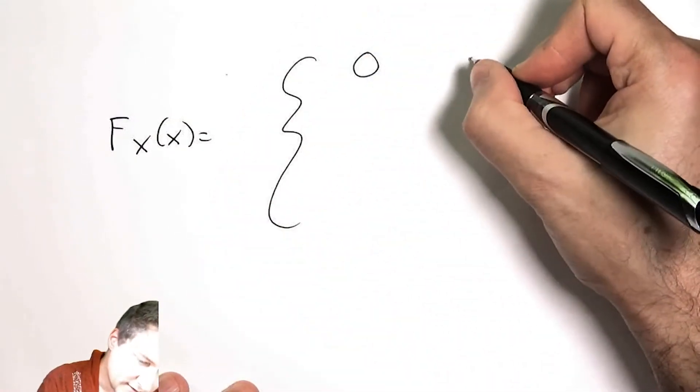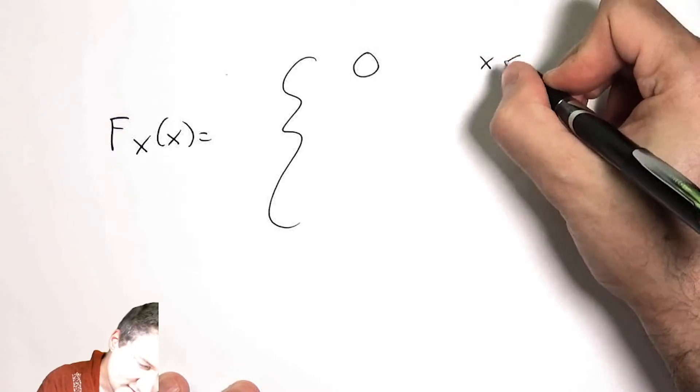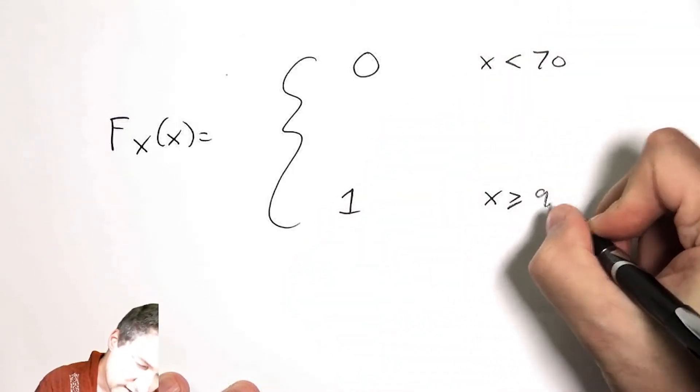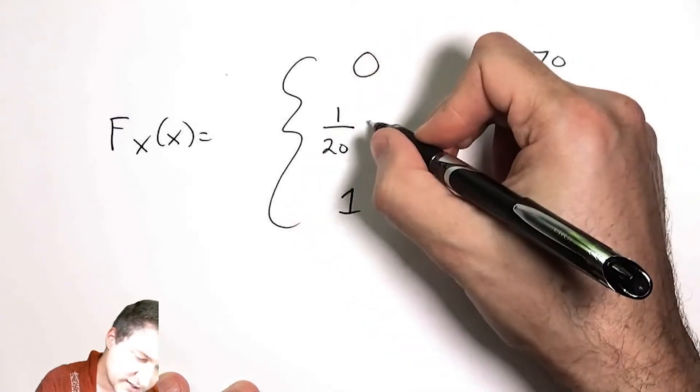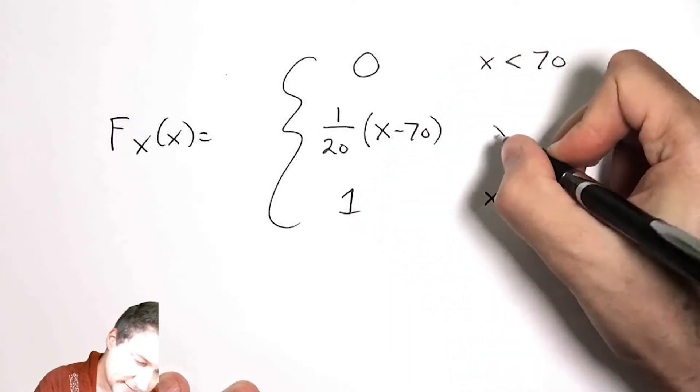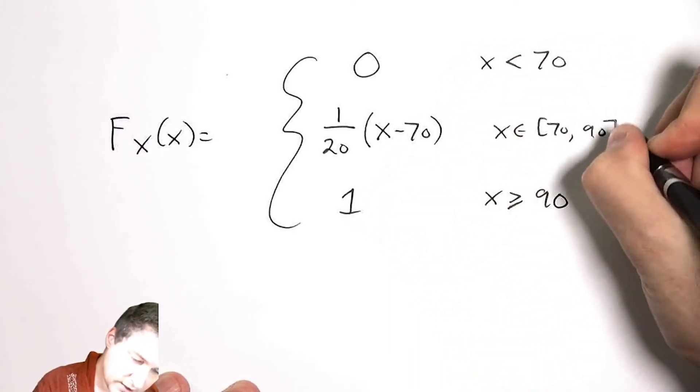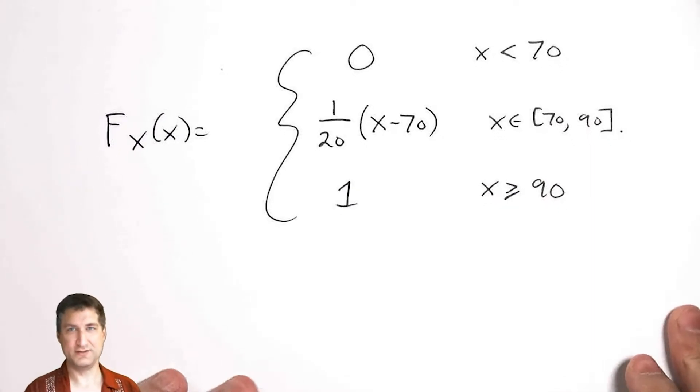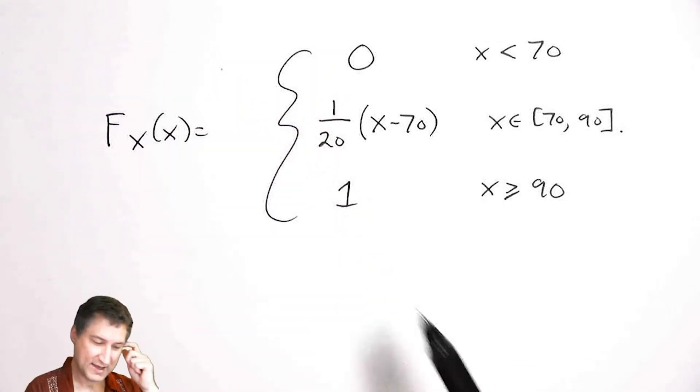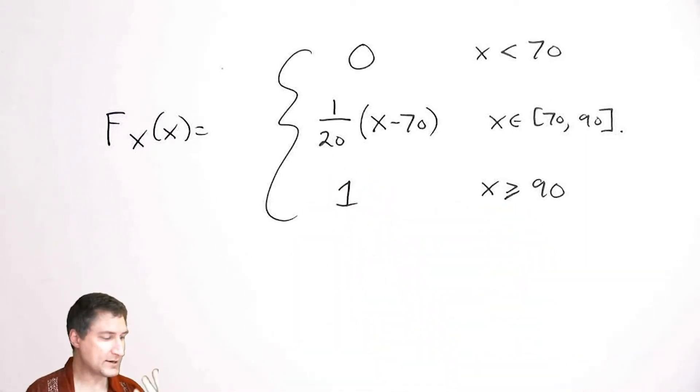So zero when x is less than 70, one when x was greater than or equal to 90. In between, it's got a slope of one 20th, and that slope starts accumulating at 70. So if you want to be really precise, if someone tells you write down the CDF, you should always make sure to remember that there's probably a zero and a one at the ends. And in the middle, you've got this function right here. In this case, this is a linear function. And now I can use the CDF to compute probabilities.